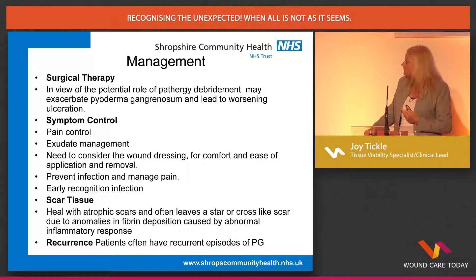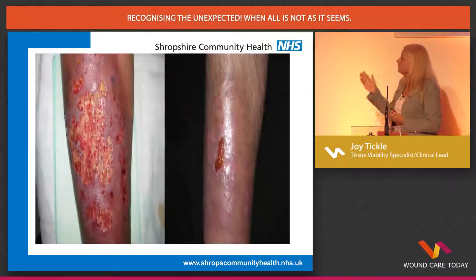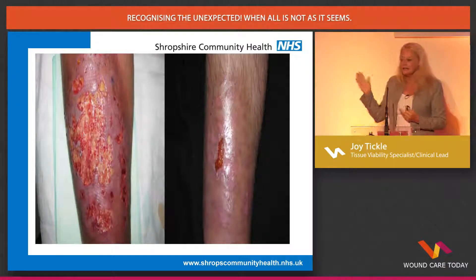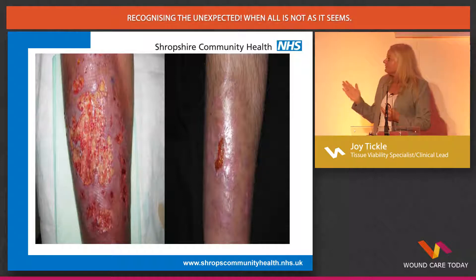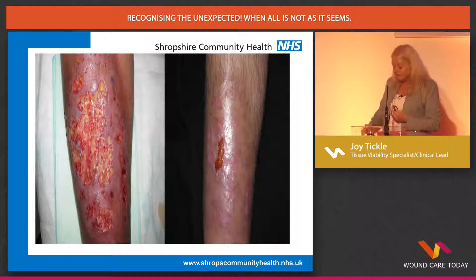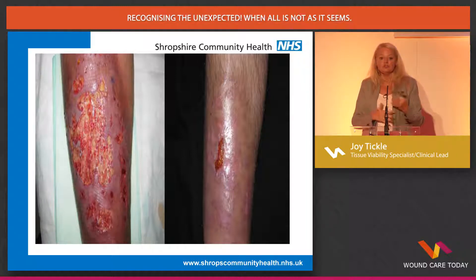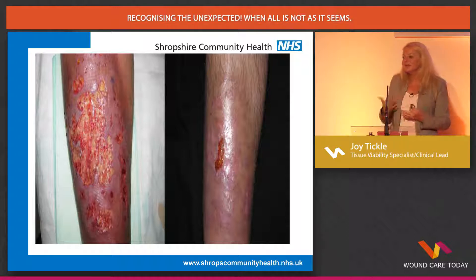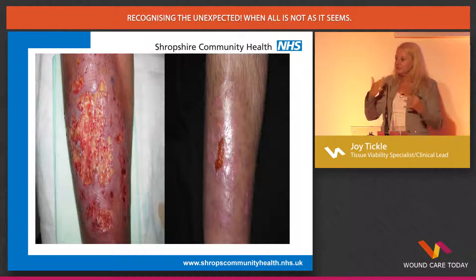Early recognition is key. Advise your patients that scar tissue might be significant, but we can get it right. With the right MDT team approach and the right treatment, they can heal. The unfortunate thing is that between 30 and 40% of patients who develop vasculitis or pyoderma can have a recurrence. So show patients what to look out for — the sooner we can see them if they have a slight lesion or a painful area, the quicker we can respond.